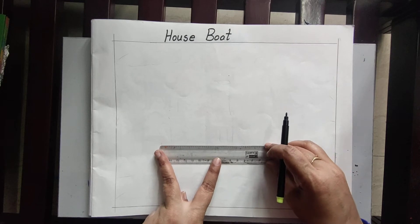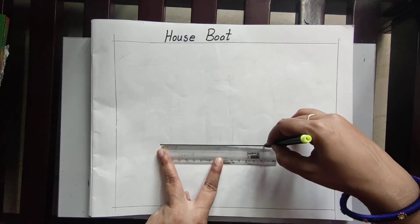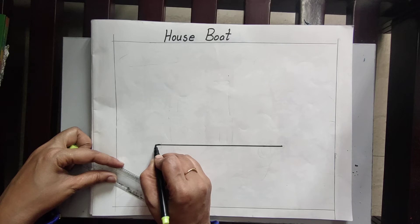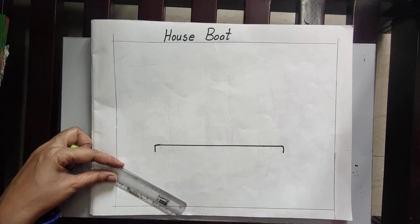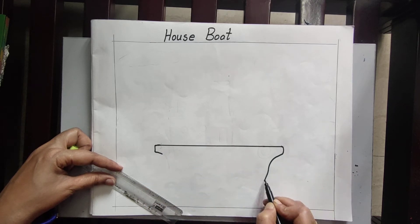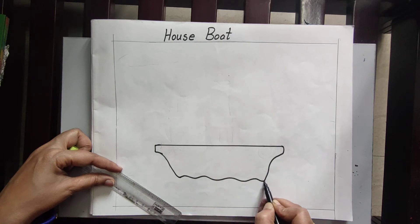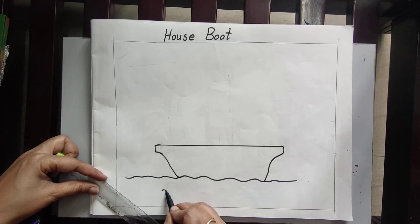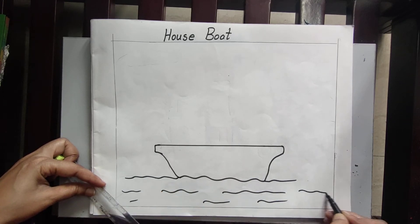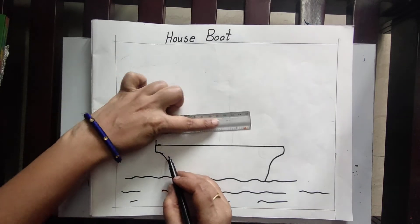First here I am drawing one line. Like this you draw one line. Afterwards, draw like this. Here I am showing water. Afterwards here I am drawing one more line.